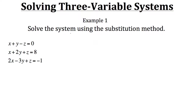In example one we have a system with three equations, each having three variables. We want to solve this system using the substitution method — that is, when we isolate one of the variables and then substitute it into the other equations. Let's start by taking the top equation and isolating z.